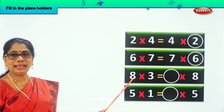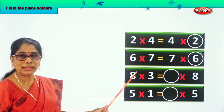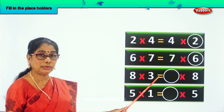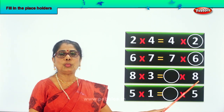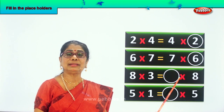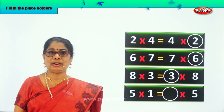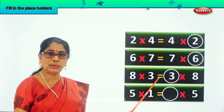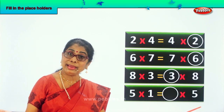8 into 3. 8 into 3 is 24. 8 into 3 is 24, which is also equal to dash into 8. What will give you 24? 8 into what number? You have to get only 3. Write down 3. So 8 into 3 is also equal to 3 into 8.